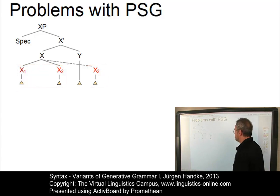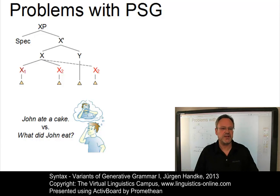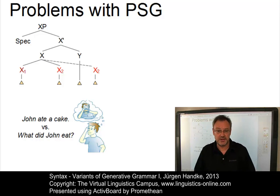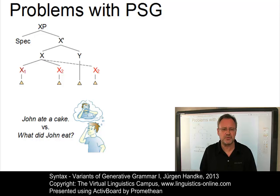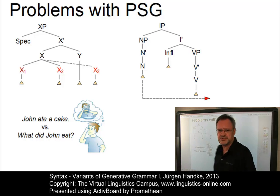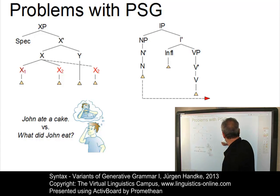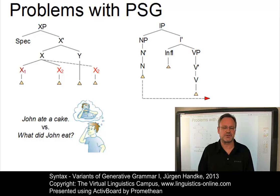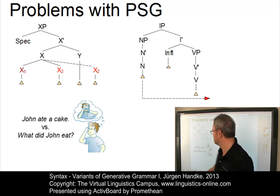And then there are sentences where the internal relations between the constituents cannot be shown. How are these sentences related: 'John ate a cake' versus 'what did John eat'? They are related very much – one is a declarative sentence, one is an interrogative sentence. But how can we show these relationships? And then there are sentences whose logical structure is not really clear – sentences where the subject noun phrase relates to a verb that is not its adjacent verb, but a verb that is more embedded within syntactic structure. Let us look at these phenomena more closely.